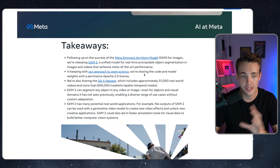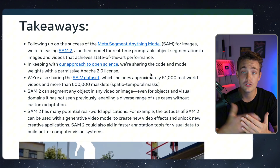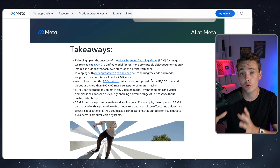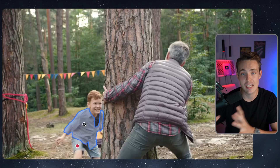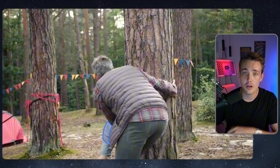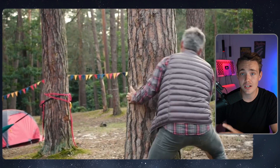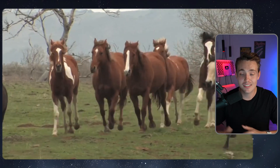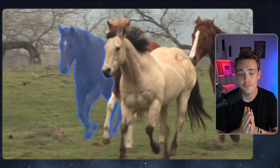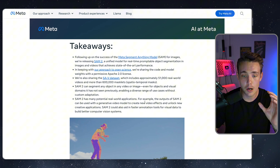The key takeaways: SAM2 now works on both images and videos, which is one of the most important upgrades, because it can track objects over time. Instead of just doing segmentation on each individual image, it has memory — using memory attention, a large transformer architecture, the same architecture behind large language models. It can track objects it has segmented throughout the frames in a video.